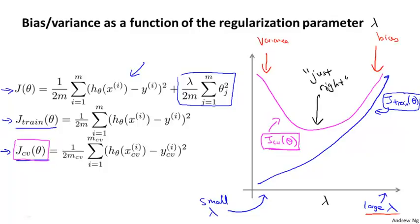The curves I've drawn are somewhat idealized. On a real data set, the curves you get may end up looking a little bit more messy and noisy than this. For some data sets you will really see these broad trends, and by looking at the plot of the holdout cross validation error, you can either manually or automatically select a value of lambda corresponding to low cross validation error. Plotting a figure like this helps understand what's going on and verify that you are indeed picking a good value for the regularization parameter lambda.